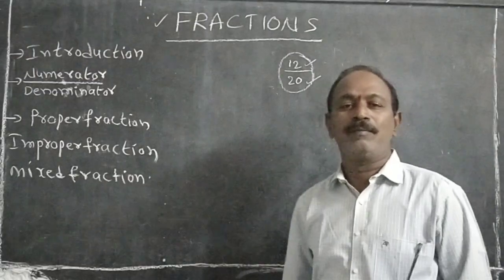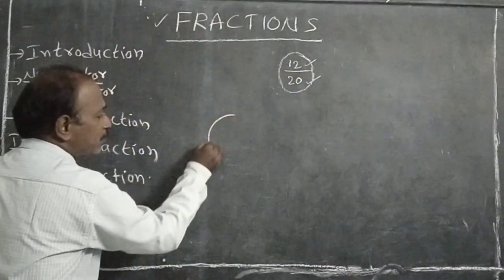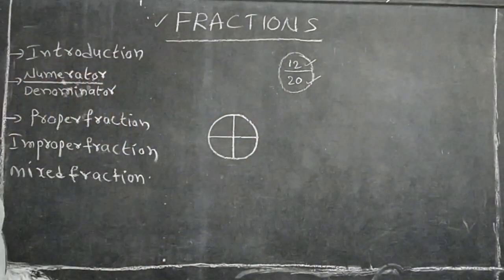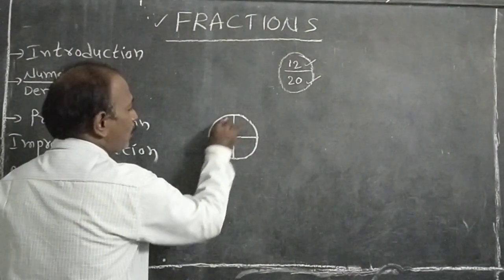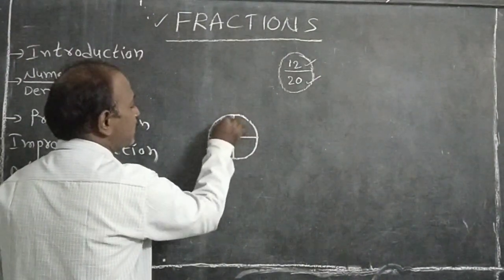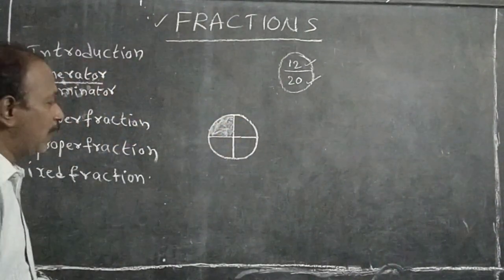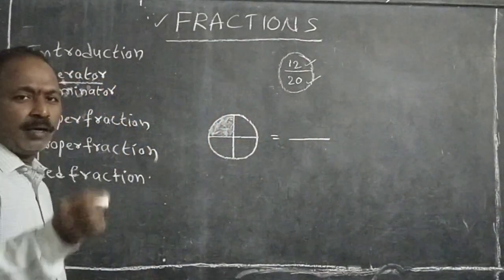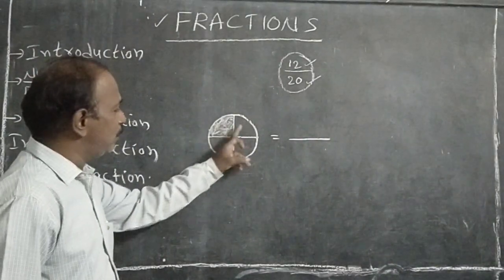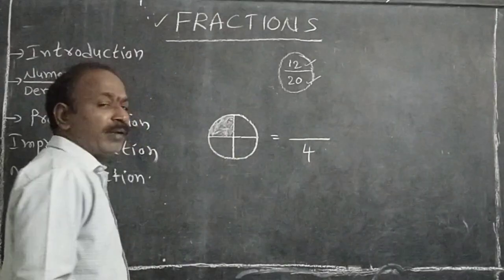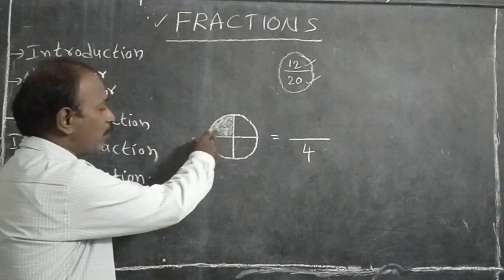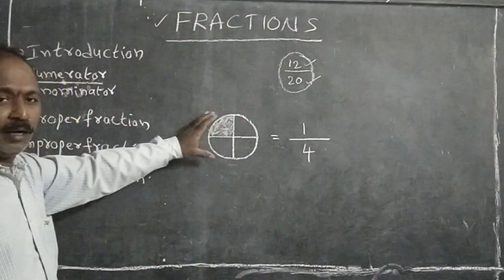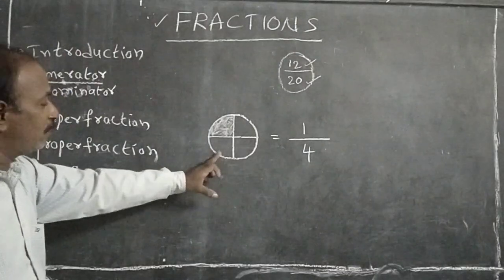When we take equal parts — first of all, I am taking 4 equal parts. Among these equal parts, one is shaded. Here, how many equal parts are there? 4 equal parts. The fraction is represented as: number of equal parts taken out over total number of equal parts. How many parts are shaded? 1. So the fraction is 1 by 4. The shaded region of this figure is represented by the fraction 1 by 4.